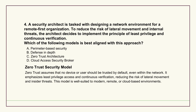Different angle now: designing a network. A company is going remote-first — a very common scenario. Their key goals are least privilege — people only get access to what they absolutely need — and continuous verification to make it harder for attackers to move around internally if they do get in, reducing lateral movement risk. Four models are on the table: traditional perimeter-based security, like the old castle-and-moat idea, which feels outdated when the perimeter is everywhere — home offices, coffee shops. Second, defense in depth — layers of security, always good, but maybe not specific enough to the trust issue inside the layers.